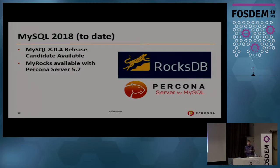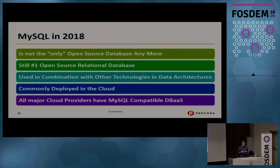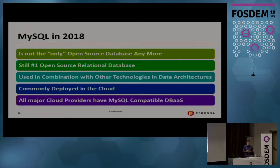Now let's look at the overall state of MySQL in 2018. MySQL is clearly not the only open source database anymore. PostgreSQL has been growing very rapidly and has been very successful in the last three to five years. We also have many special-purpose databases — InfluxDB for time series, Neo4j for graph databases, Elasticsearch for full-text search — all of which are better suited for certain queries than MySQL.